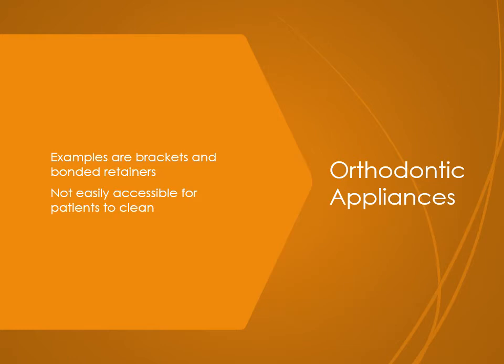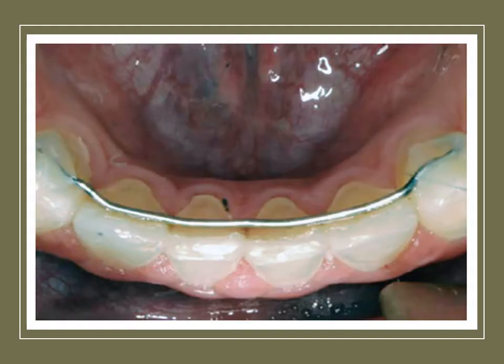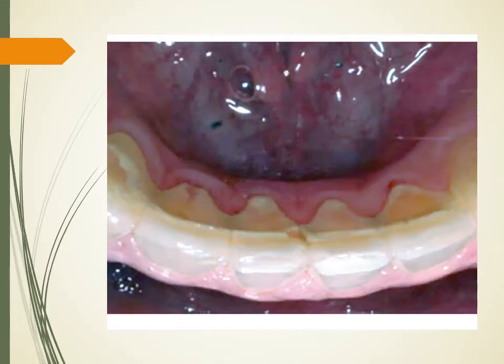Orthodontic appliances such as brackets and bonded retainers are not easy for patients to keep clean. Calculus gets completely caked into the interproximal areas underneath the wire bar. Over time, calculus can completely encompass and encase the wire of a retainer.